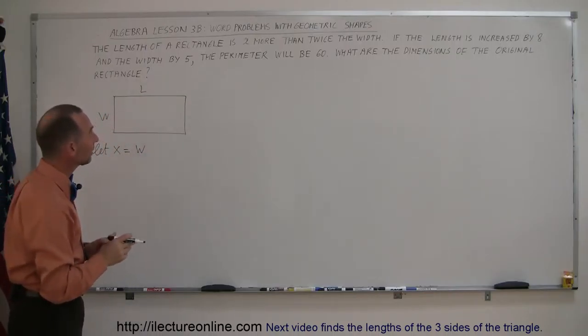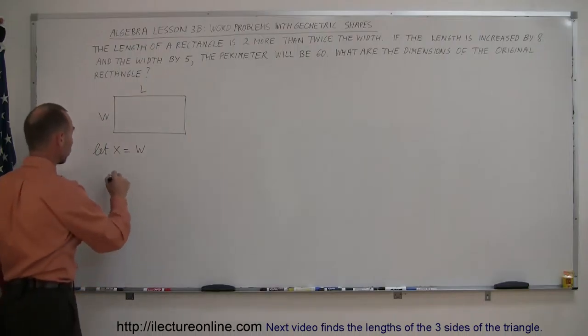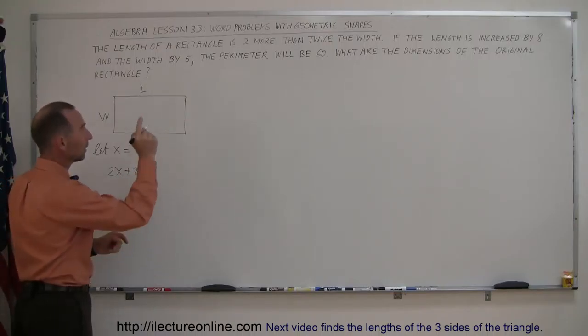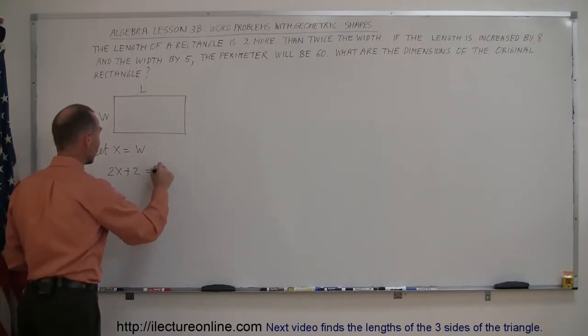It says here that the length is two more than twice the width. So 2x is twice the width, and then two more we have to add to that. So 2x plus 2 is twice the width plus two, which is therefore equal to the length.